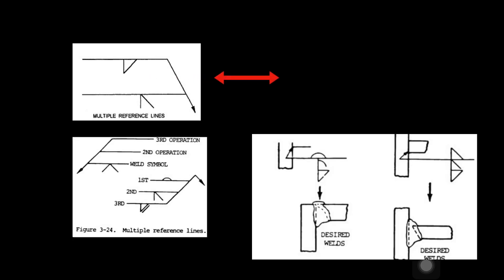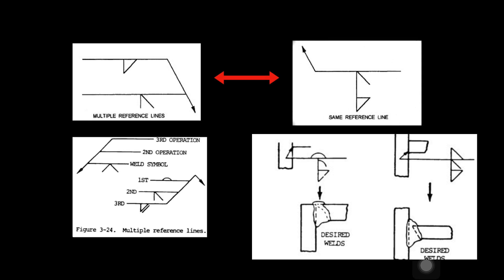Sometimes the welding operation involves a lot of steps where we can indicate that in multiple reference lines. Here each line represents a separate operation and it is performed in order beginning with the line closest to the arrow. And these multiple operations shall be indicated in a single reference line also.